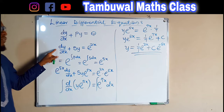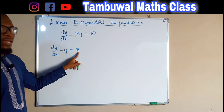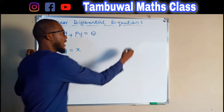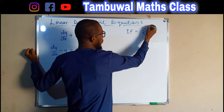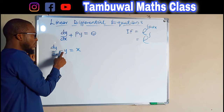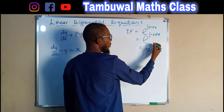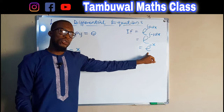Now let us look at the second problem. We have dy/dx - y = x. The first thing we do is find our integrating factor, which is always e to the integral of p dx. Here p is the coefficient of y, which is negative 1. So this equals e to the integral of negative 1 dx. Integrating gives negative x, so our integrating factor is e^(-x).